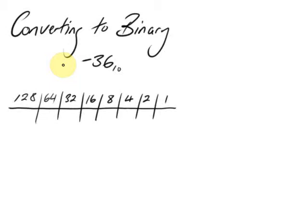Now there's a couple of ways of doing this. We're going to use two's complement numbering system, so the most significant bit is worth minus 128.